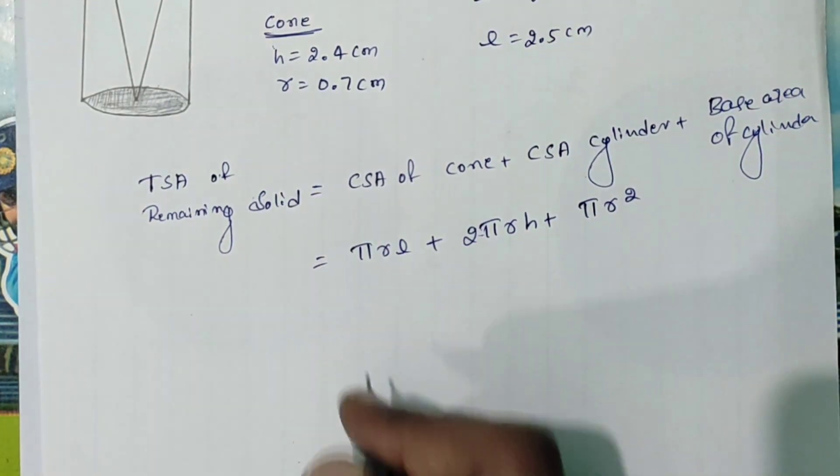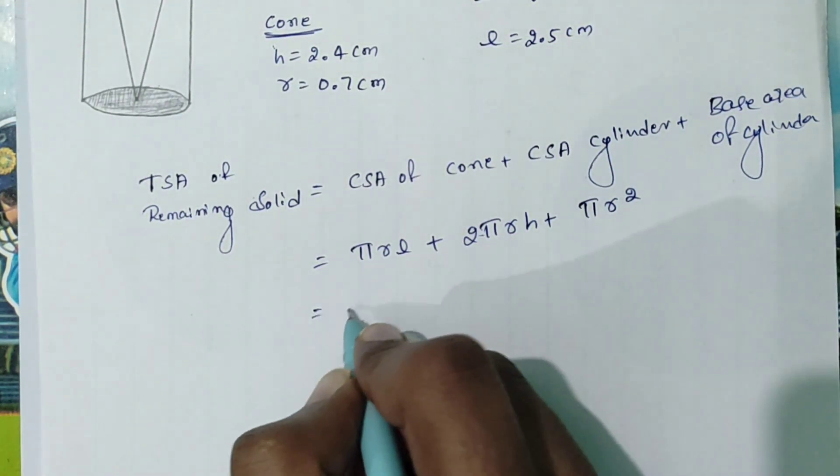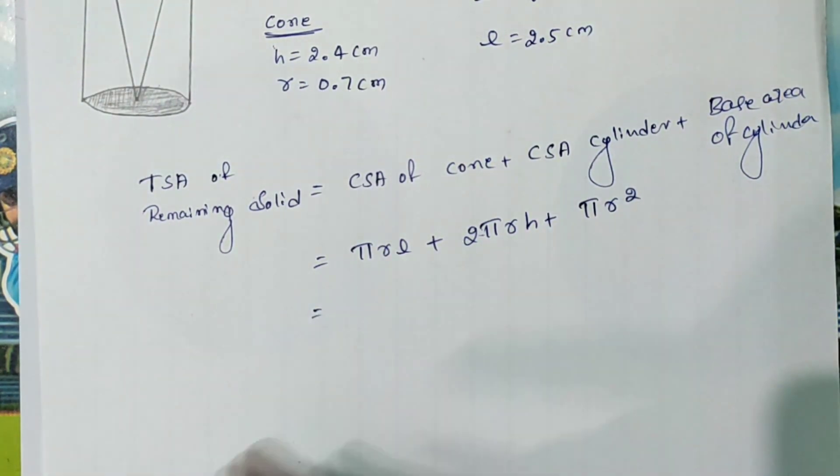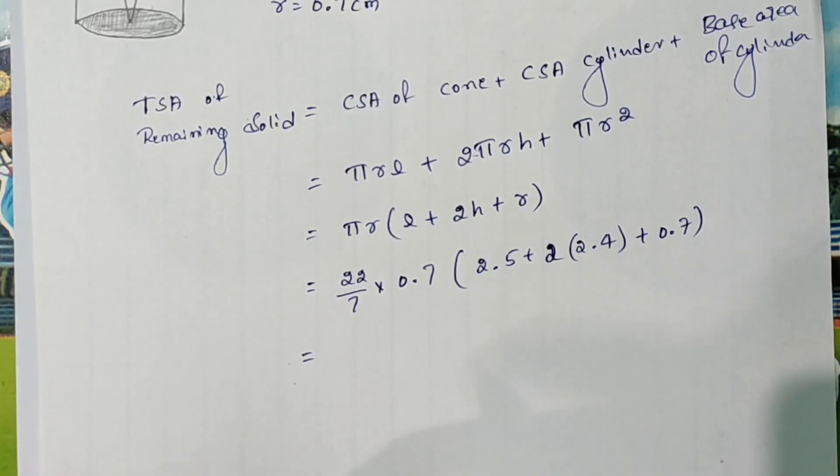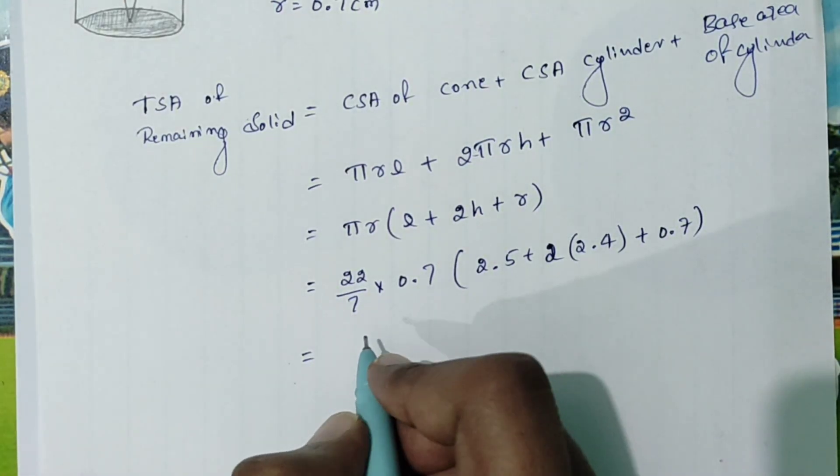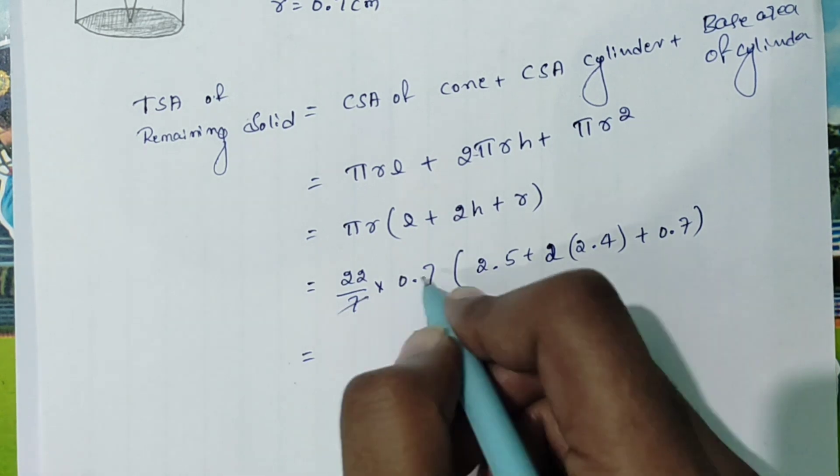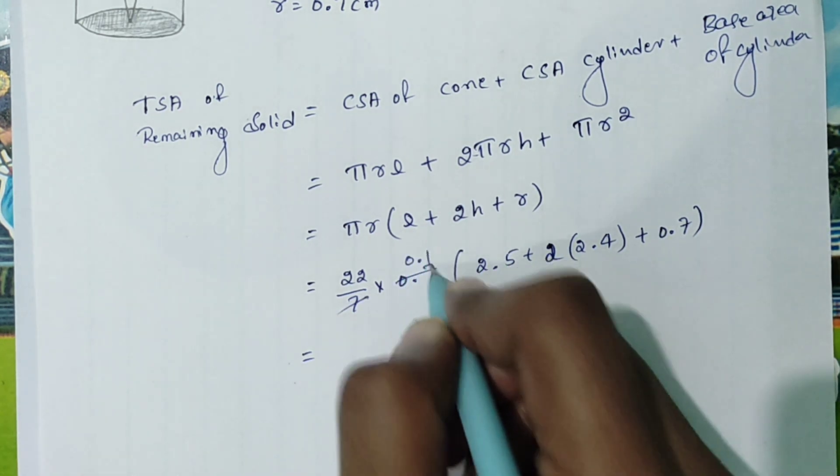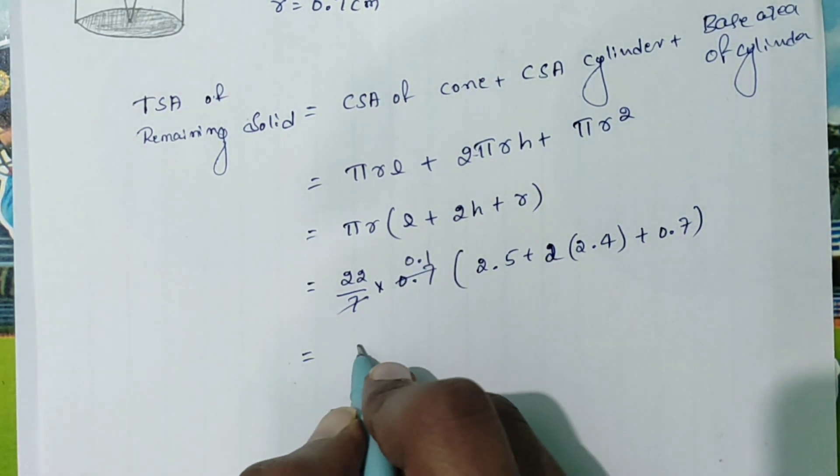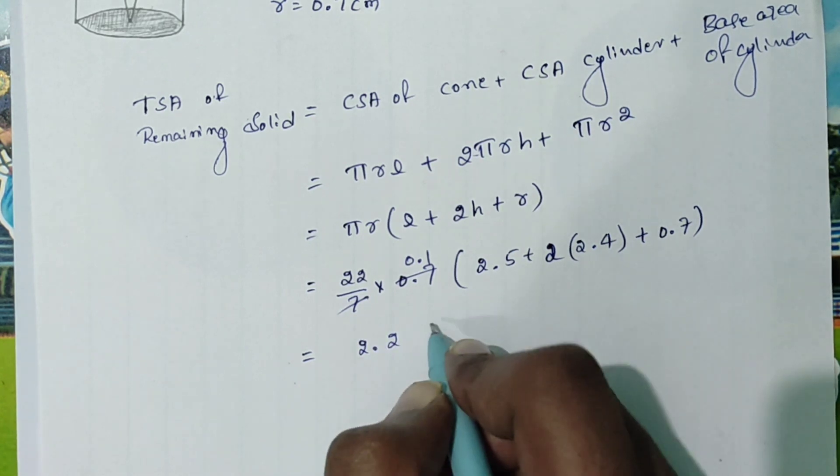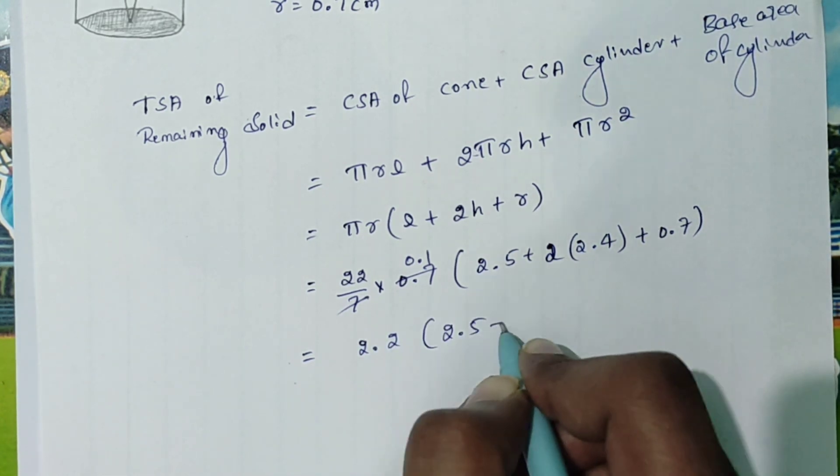Now substitute this value and the further calculation it takes as it follows. After simplification, we are going to get 2.5, 4.8 plus 0.7.